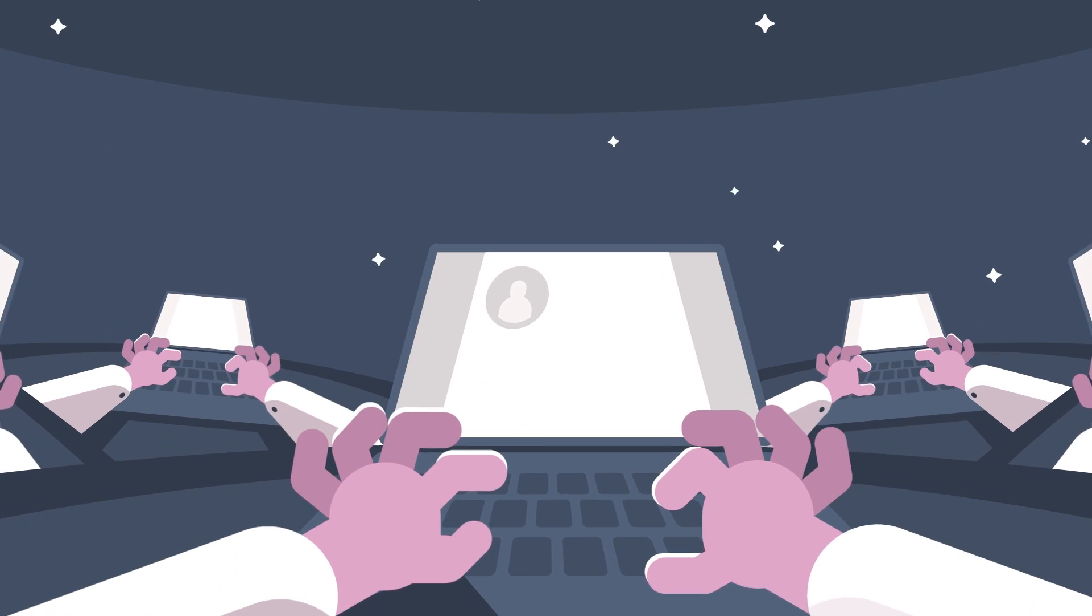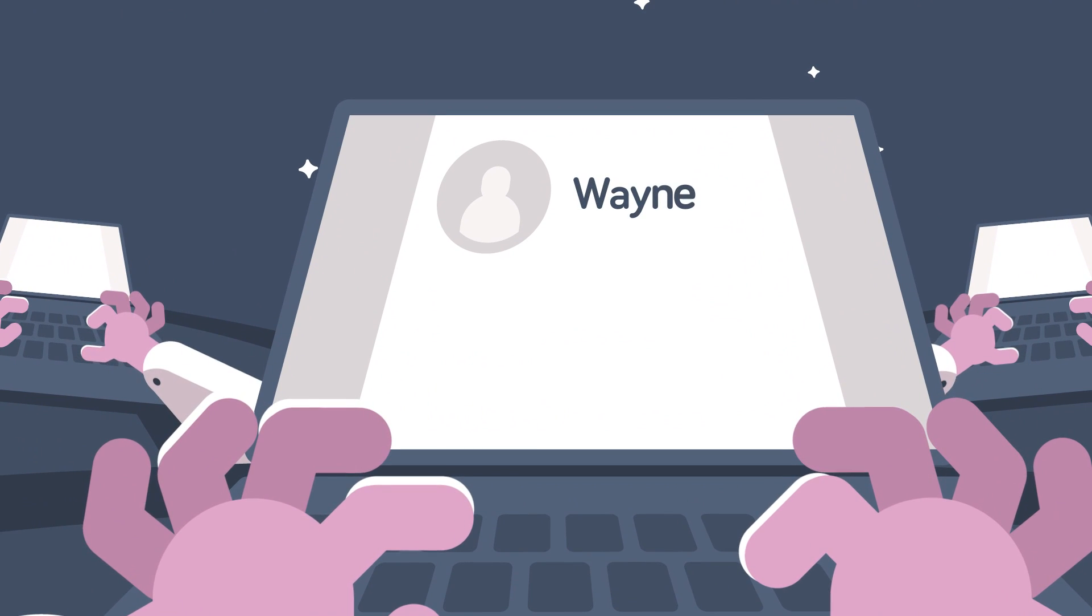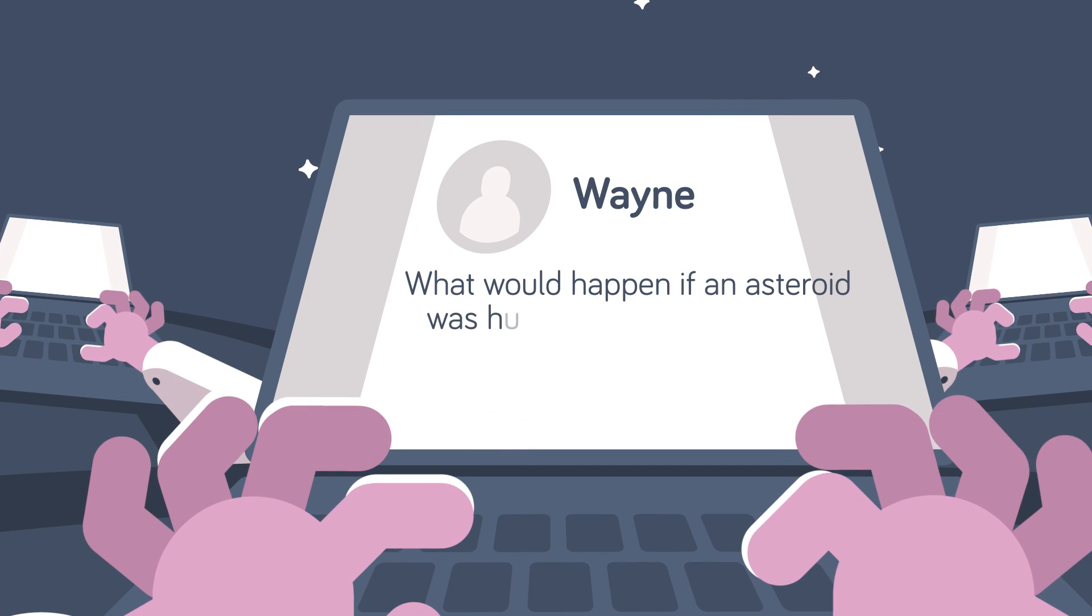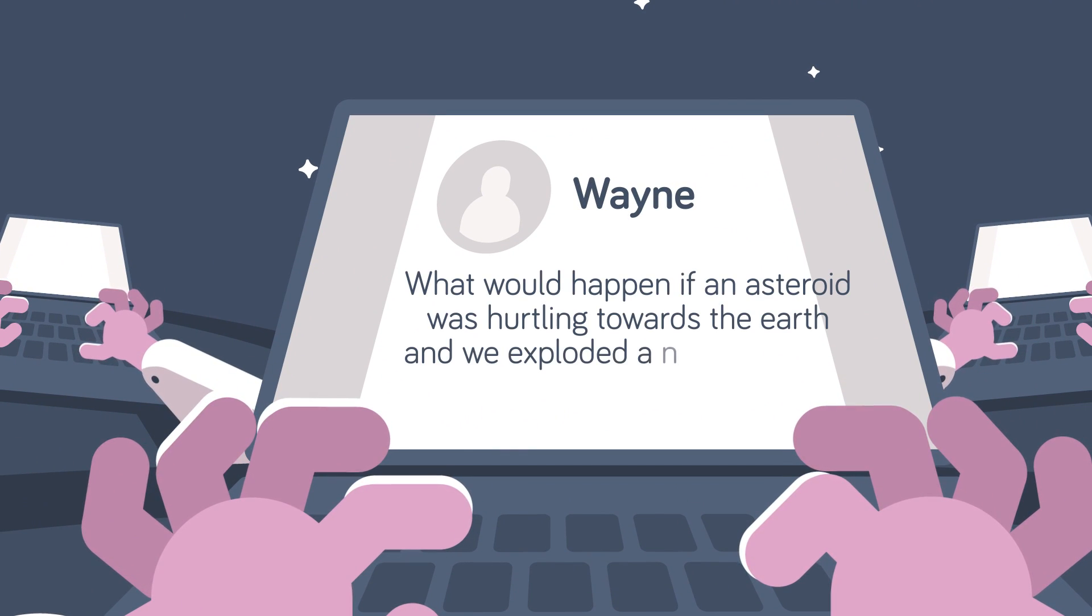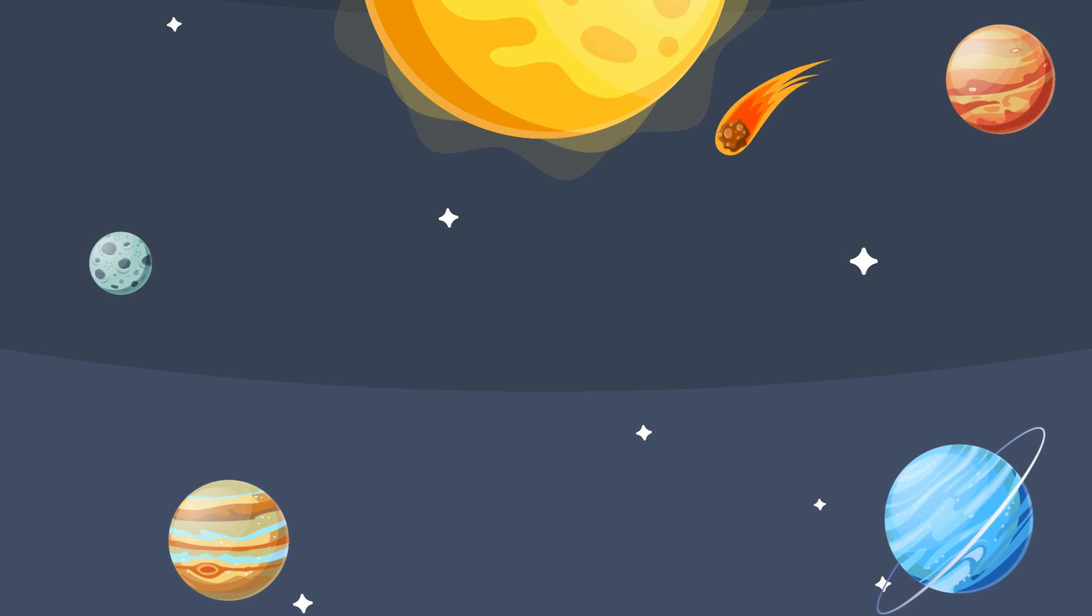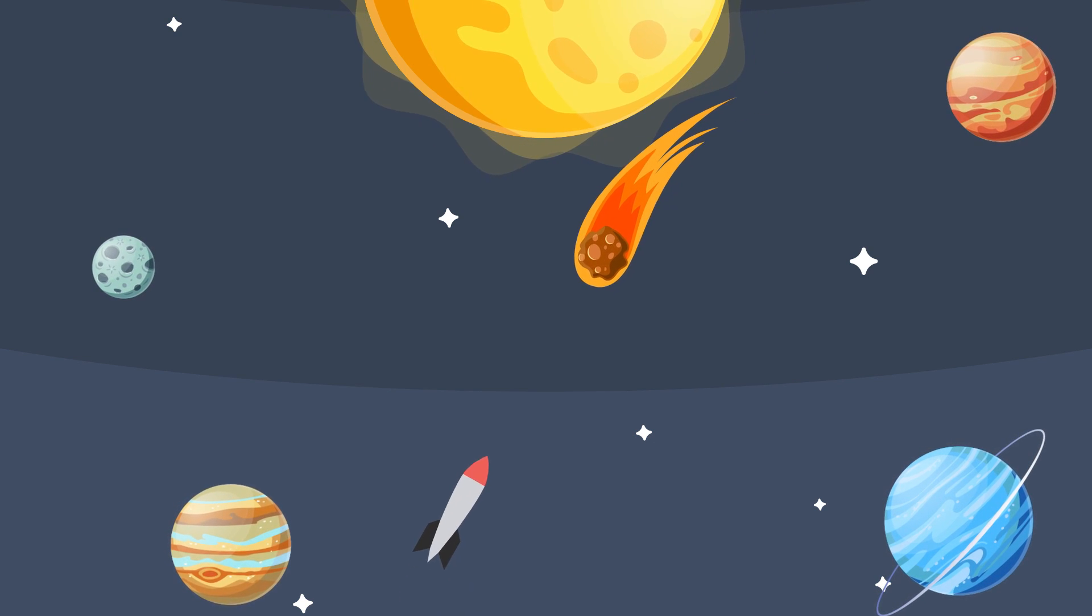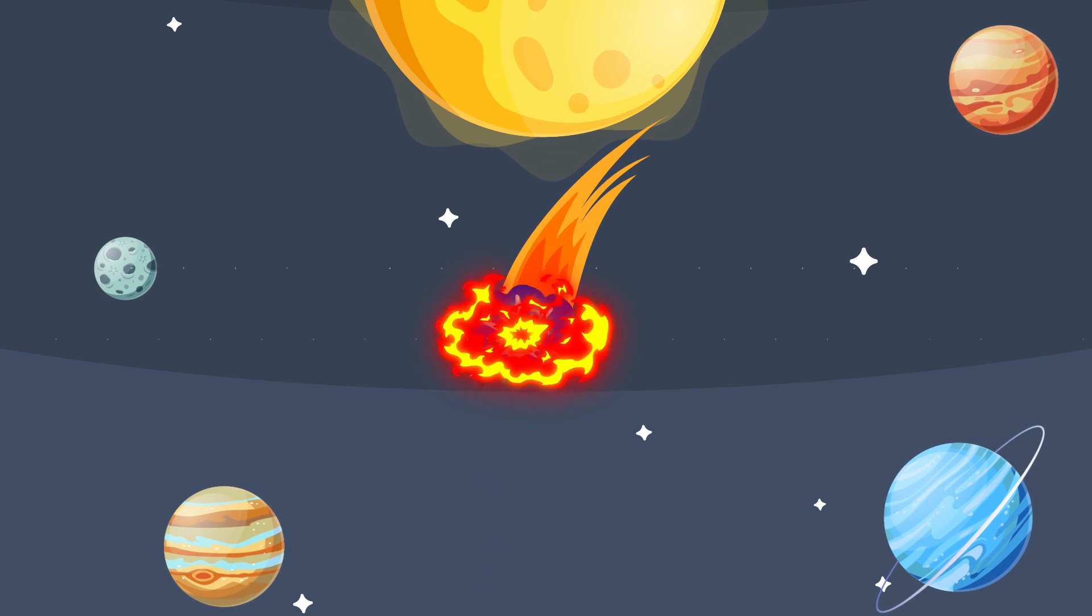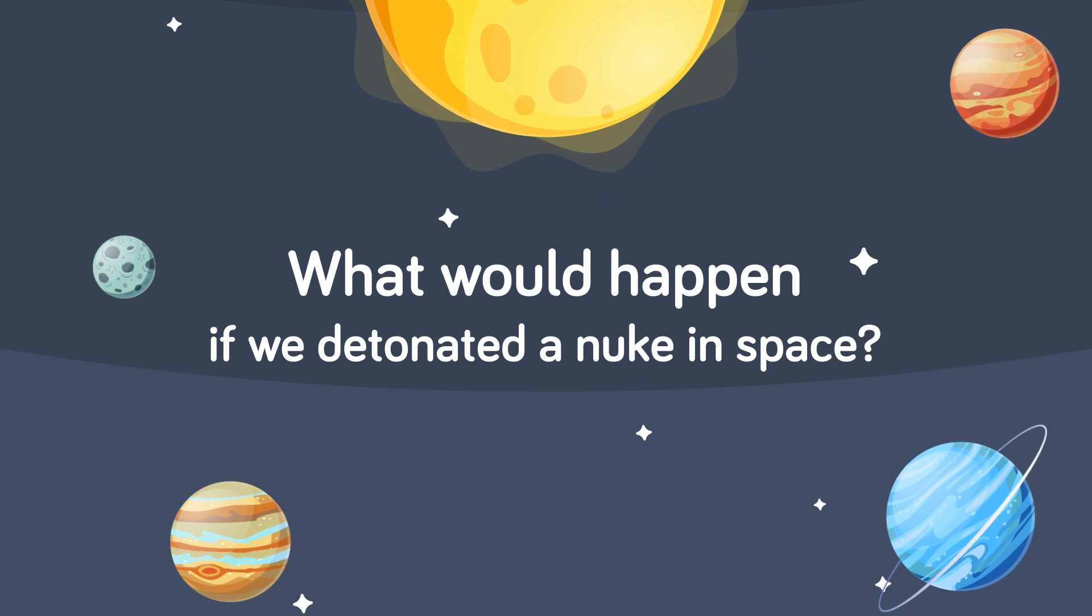Today we're going to be answering a question by Wayne who emailed us asking, what would happen if an asteroid was hurtling toward Earth and we exploded a nuclear device in space to stop it? Well, we're going to tell you! Join us as we dive into the world of astrophysics, nuclear technology, and simple mechanics to find out what would happen if we detonated a nuke in space.